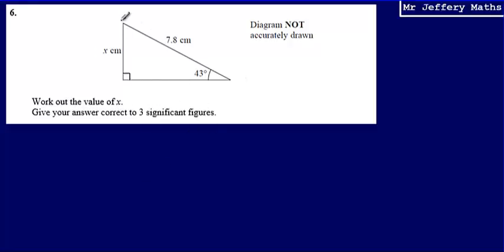We've got a right angle triangle with an angle and a length. In order to find another length, we're going to need to use trigonometry.